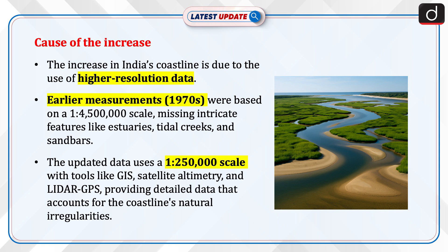The primary reason for the drastic increase in India's coastline is the use of higher resolution data. The earlier measurement, made in the 1970s, was based on data with a 1:4,500,000 scale — meaning one unit on the map represented 4,500,000 units — which could not accurately capture the coastline's intricate features like estuaries, tidal creeks, sandbars and coastal ridges.